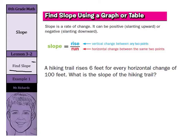So in our first question here, we are being asked, a hiking trail rises 6 feet for every horizontal change of 100 feet. What is the slope of the hiking trail? If we look at slope being rise over run, what was our vertical rise? Well, 6 feet over our horizontal change of 100 feet.